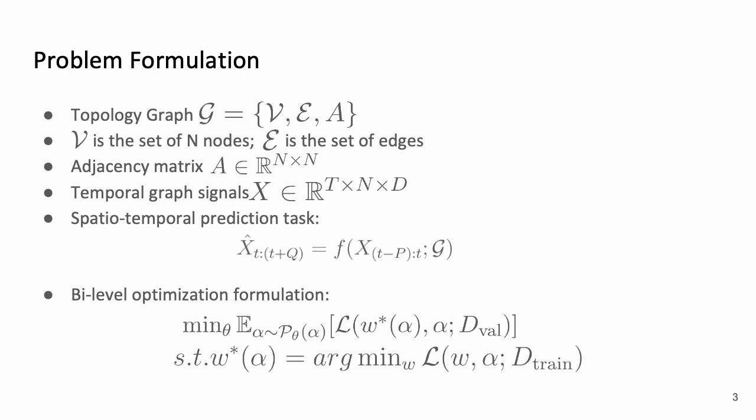As a result, we formulate into a bi-level optimization problem. At the outer level, we provide an additional alpha which encodes the architecture.